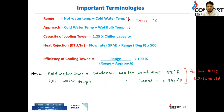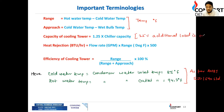The capacity of the cooling tower includes a 1.25 factor — meaning 25% additional load is considered. This 25% additional load is accounted for due to losses in the cooling tower.